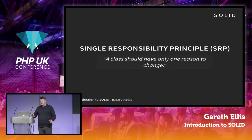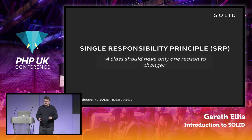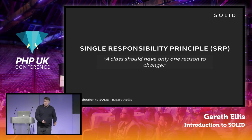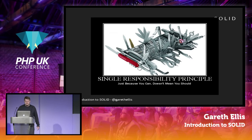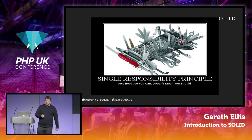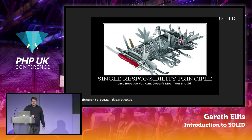For example, if you have a class which deals with talking to the database, the only reason for that class to change would be if you change something about the way you're talking to the database — say you're going to change a query. Classes shouldn't get ideas above their station. A good rule of thumb: try to define the purpose of your class in a single sentence without using the words 'and' or 'or'. If you can't do that, your class might be doing too much.